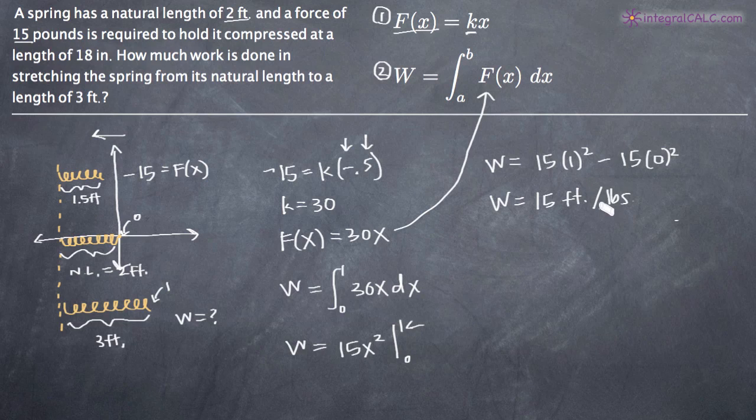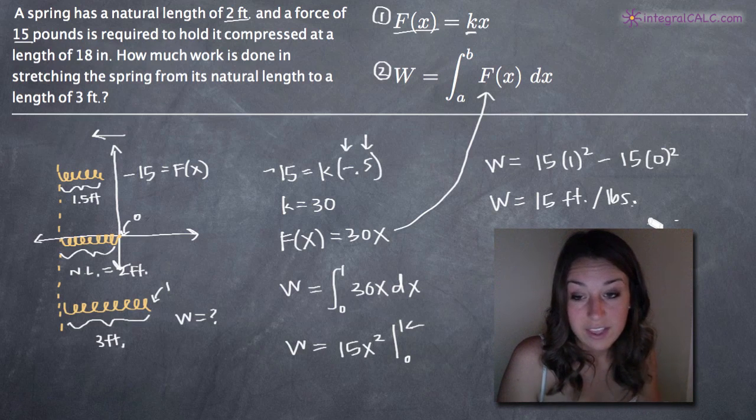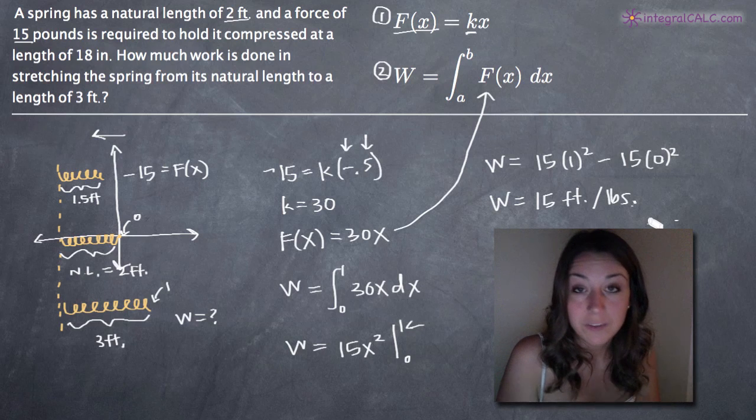And remember the reason that we do foot-pounds is because the distance or the length of the spring is measured in feet and the force that we need to expand it is measured in pounds. So work is therefore in foot-pounds. So that's it. That's how we calculate work done to expand or compress a spring. In this case, the work is 15 foot-pounds to expand it. I hope that video helped you guys and I will see you in the next one.